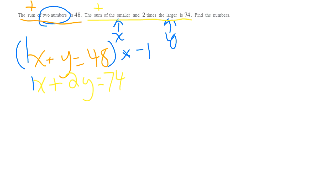And so I'll multiply that first one by negative one. So I've chosen addition as the method to solve this. So if I multiply by negative one, I'm going to have negative X minus Y equals negative 48. And then my other equation stays X plus 2Y equals 74.